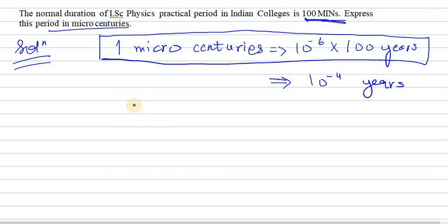We need to convert minutes into micro centuries. First, we'll convert years. In one year we have 365 days, so 10^-4 years equals 10^-4 × 365 days × 24 hours × 60 minutes.